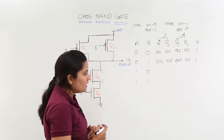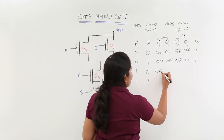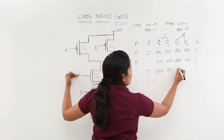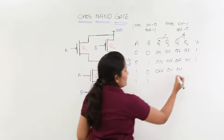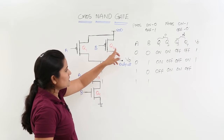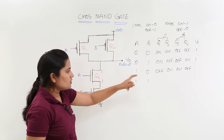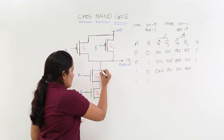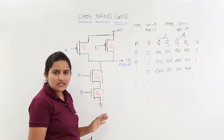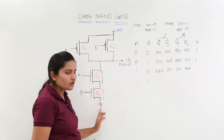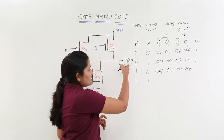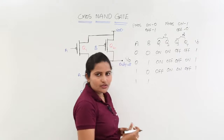In the 10 case, the first PMAS Q1 is going to OFF and the second PMAS Q2 is going to ON because we provided 0 to B. Reverse of that, Q3 is ON as we provided 1 to A, and Q4 is OFF as we provided 0 to B — NMAS will OFF for low voltage. Q2 is ON giving a short path; Q3 is ON but Q4 is OFF giving an open path from output to ground. V0 is then connected to VDD through Q2 PMAS, so you get 1 at the output.